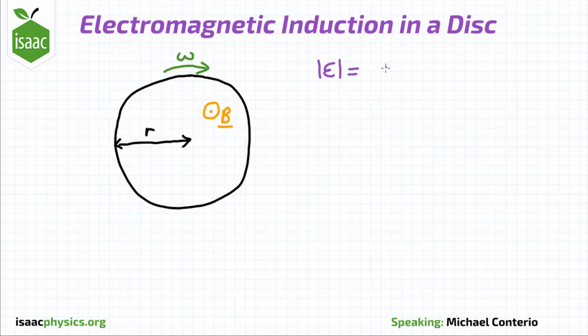We know from Faraday's law that the magnitude of the EMF produced is equal to the rate of change of flux linkage.